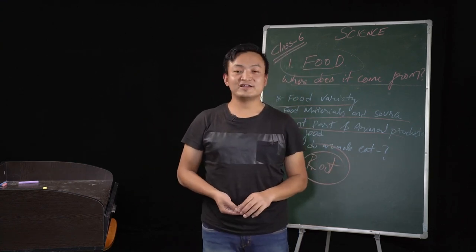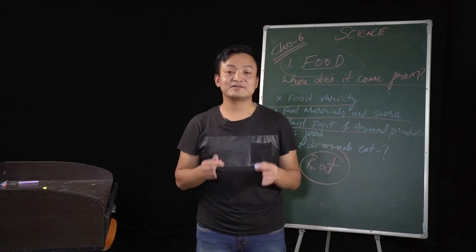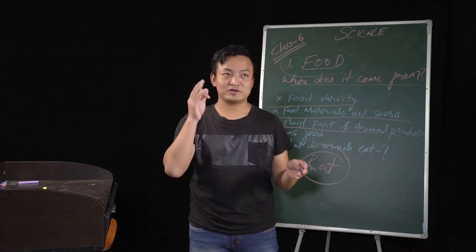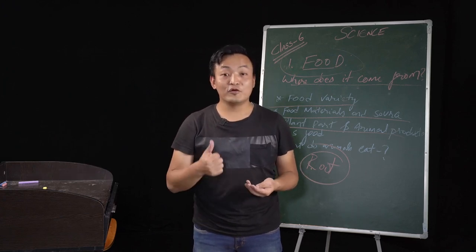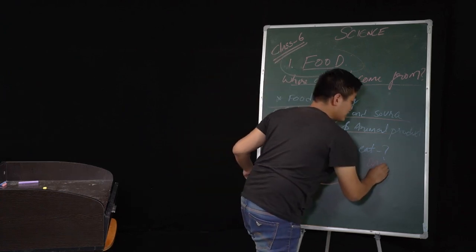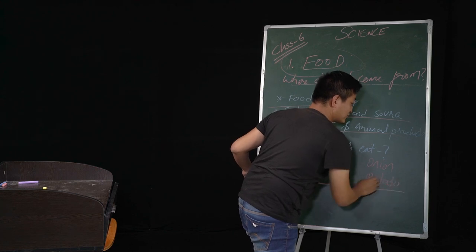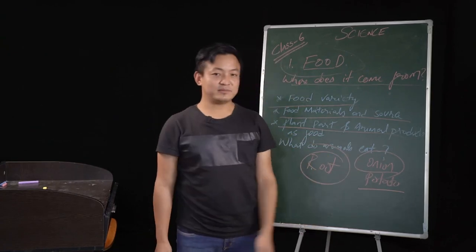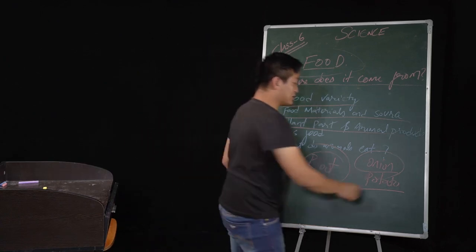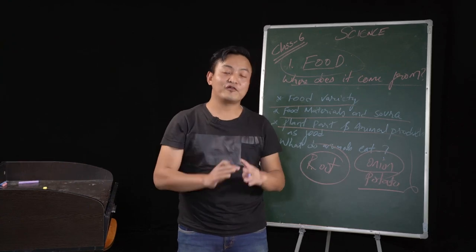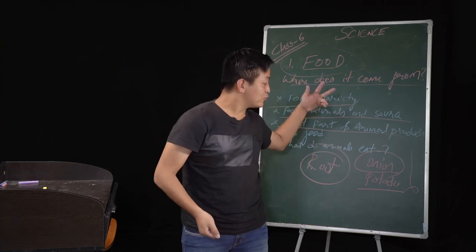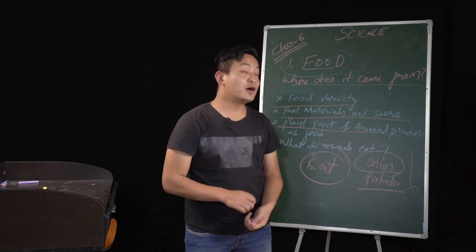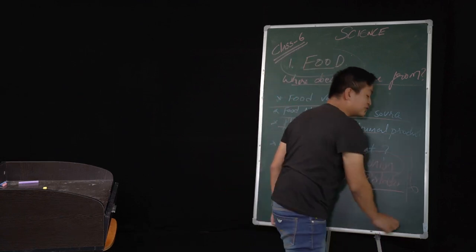Now let's talk about modified stem. I said stem, but I said modified stem. Stem you all know — if I say modified stem, give me some examples. That would be onion and potato. Onion and potato are very common. Onion and potato are the modified stem of the plant. The origin from where we get onion and potato is from the plant, but which part of the plant is onion and potato? They are the modified stem.